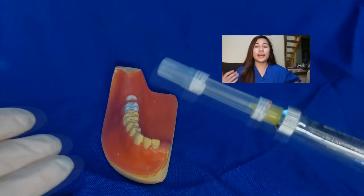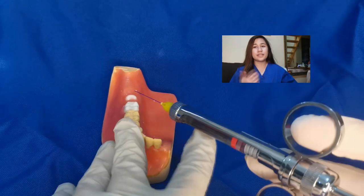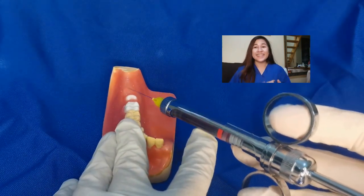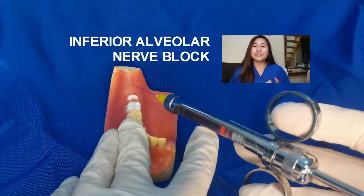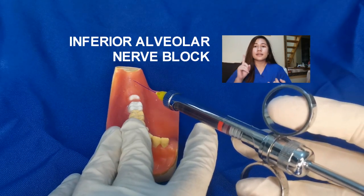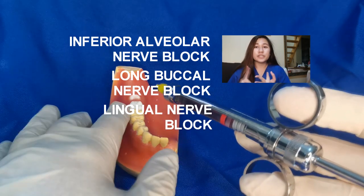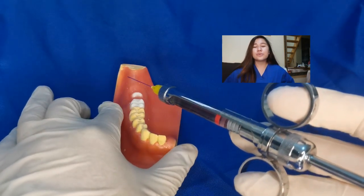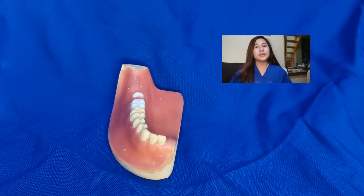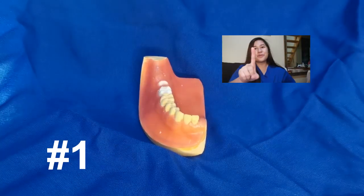I will be administering the anesthesia. The anesthesia techniques we use are the inferior alveolar nerve block, the long buccal nerve block, and the lingual nerve block. Once you are done anesthetizing, your patient will be numb.